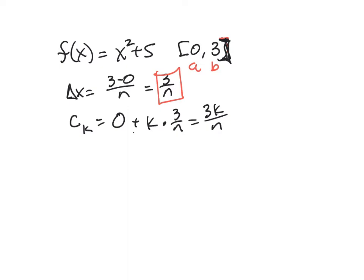Then we have to plug that C sub k into the function to figure out the expression F of C sub k. So we're going to have 3k over N squared because the function is x squared plus 5. So 3k over N squared plus 5. And I'm going to simplify that a little bit. This is 9k squared over N squared plus 5.